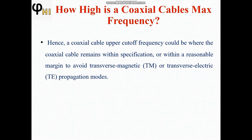A coaxial cable's upper cutoff frequency is where the cable remains within specification, or when there is a reasonable margin to avoid the transverse electric or transverse magnetic modes. If a high frequency propagates through a coaxial line above the cutoff frequency, the transverse electromagnetic mode will no longer propagate, and the transverse electric or transverse magnetic mode will travel instead, causing the coaxial cable to behave like a waveguide.